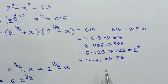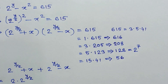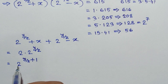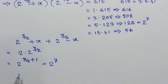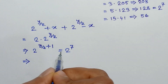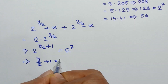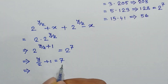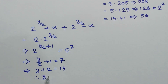For an integer solution, only the pair giving sum 128 is acceptable. So we get 2^(y/2 + 1) equals 2^7. Since the bases are the same, the exponents are equal: y/2 + 1 = 7. Multiplying both sides by 2 gives y + 2 = 14, so y equals 12.